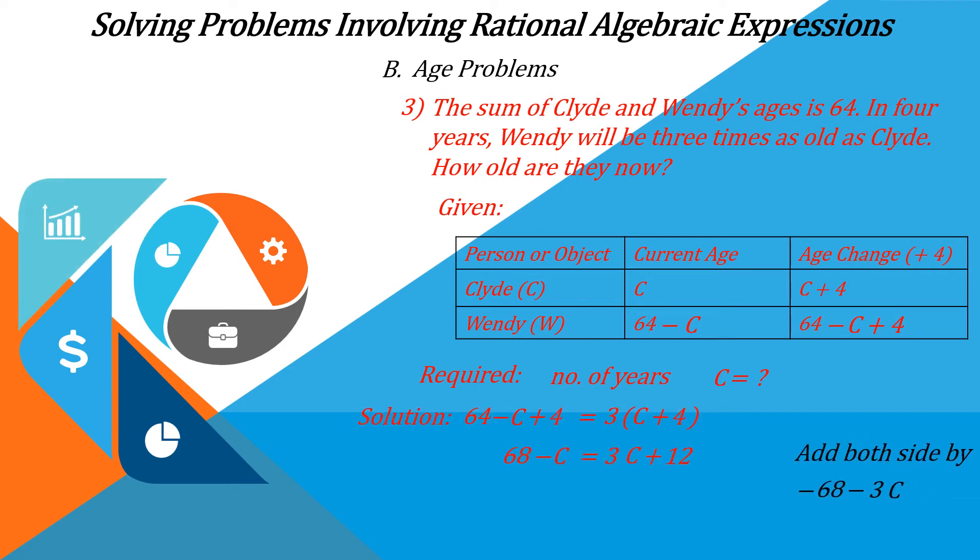Subtract 68 and 3C from both sides. We have negative 68 minus 3C plus 68 minus C is equal to 3C plus 12 minus 68 minus 3C. And in the left-hand side of the equation, we can cancel minus 68 and plus 68.